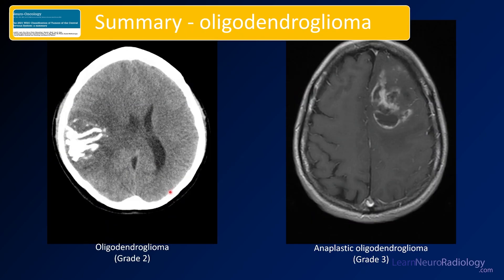Here again is a summary of these two oligodendroglioma cases. The first had dense calcification — oligodendrogliomas are the primary brain tumor most likely to calcify. Anaplastic oligodendrogliomas look a lot worse; they really mimic GBMs. In most cases, if you said this is a GBM, you're probably right on track. So those anaplastic ones can look pretty bad.